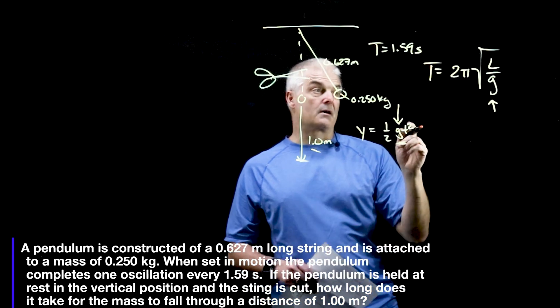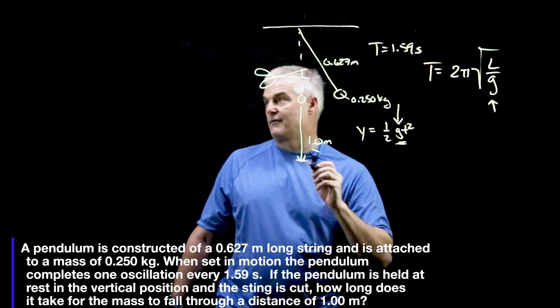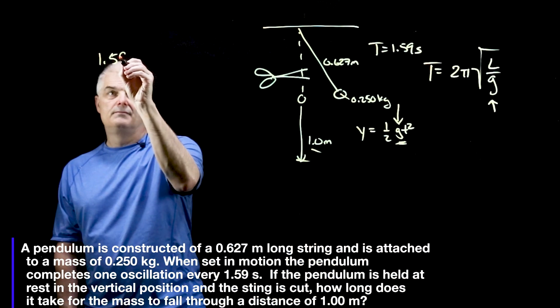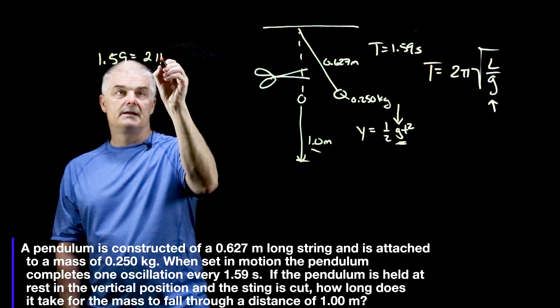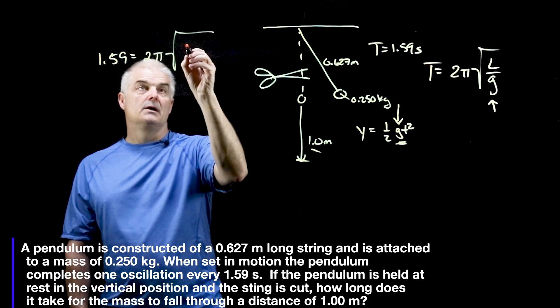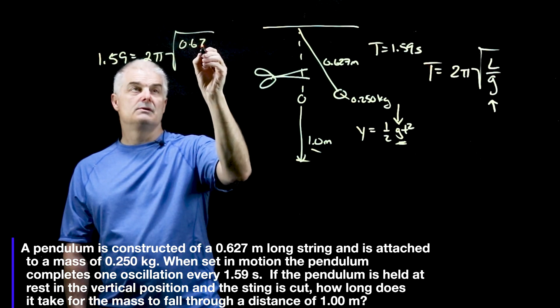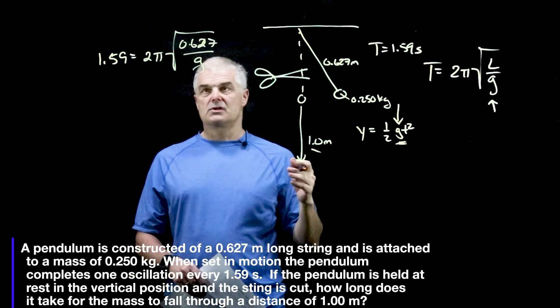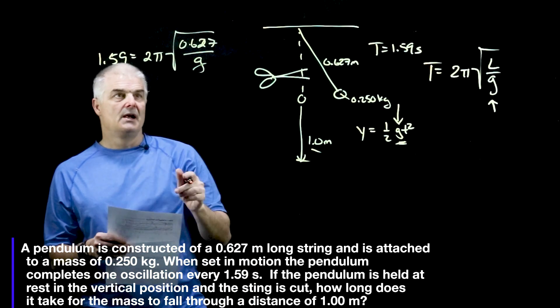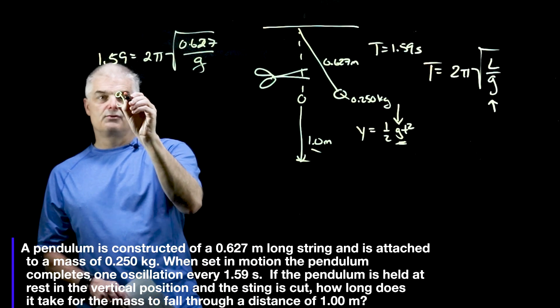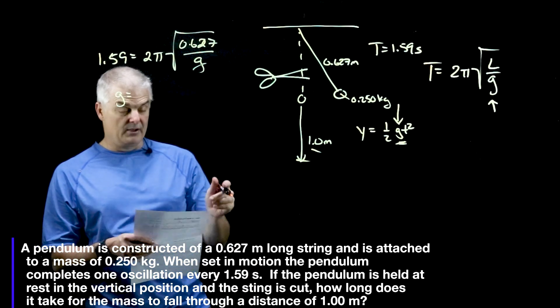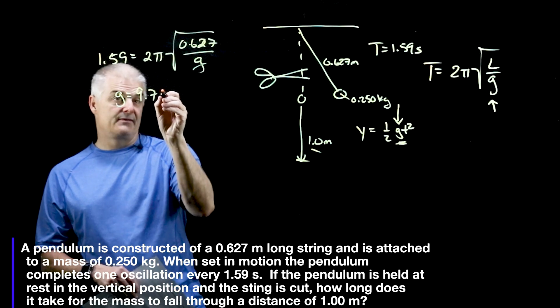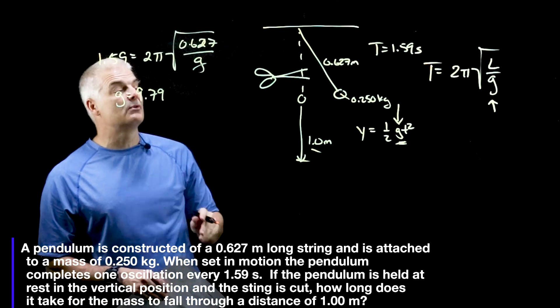Now our time, our period, if you will, is 1.59 seconds, and that's equal to 2π square root of 0.627 over g. Now we rearrange, you have to square things. I'm not going to get into the algebra of this, but you solve for g, and what you come up with is 9.79. Not 9.81, but 9.79.